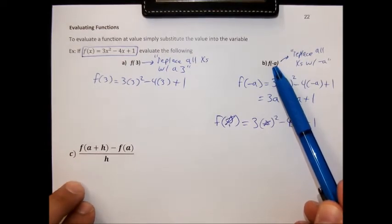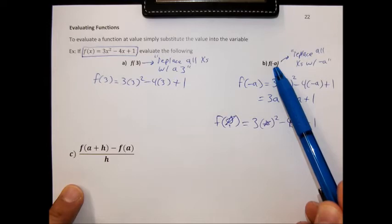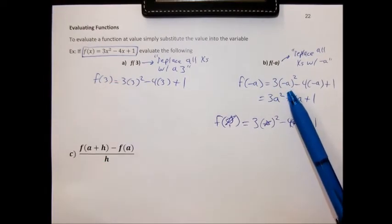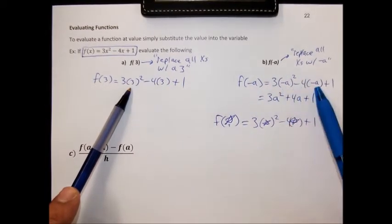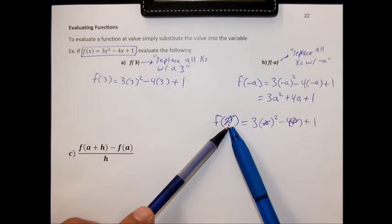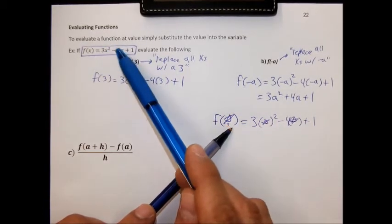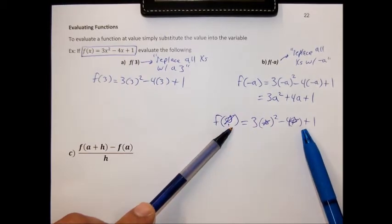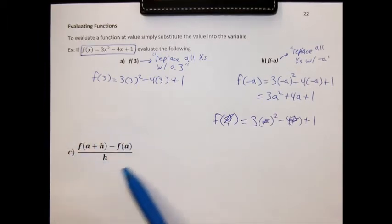We use that same intuition when we do something more complicated like f of minus a. Even though it's not a number — it's a variable — it still means take out the x's and put in whatever's inside the parentheses, which in this case is minus a. We can even plug something weird like a star in. And f of star plus squiggly would mean taking this equation, removing the x, and putting in star plus squiggly.